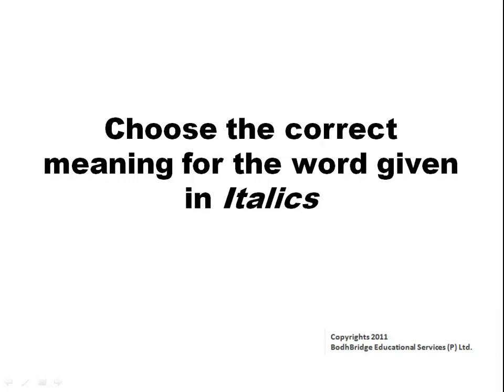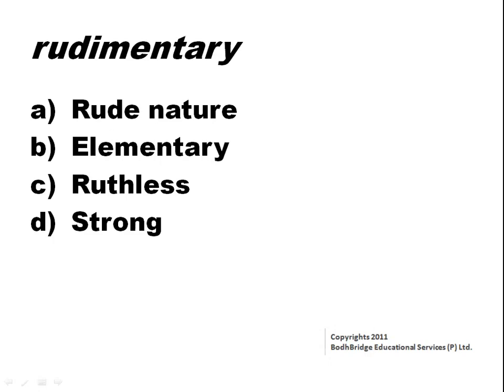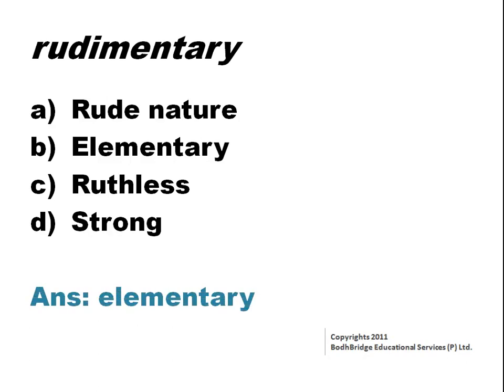Choose the correct meaning for the word given in italic. Rudimentary. The options are: rude nature, elementary, ruthless, strong. Rudimentary means an elementary or primitive form of something. Therefore, the correct answer is option B, elementary.